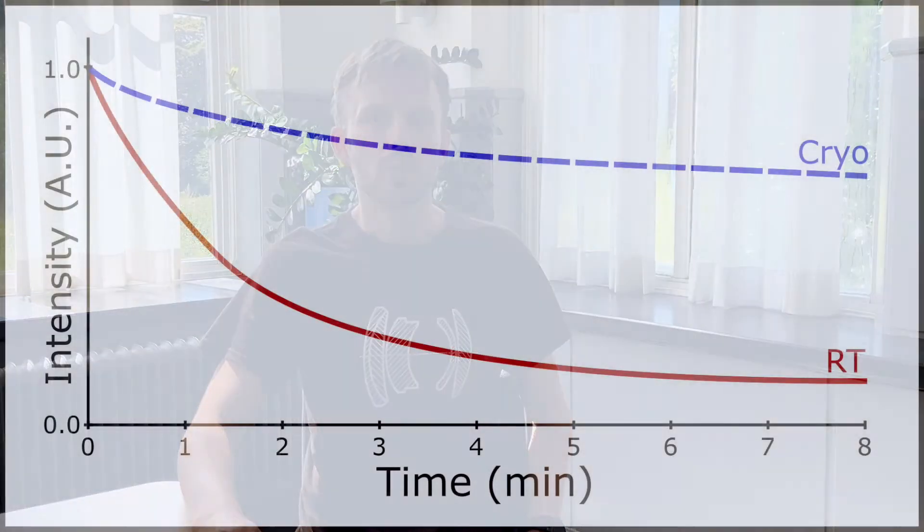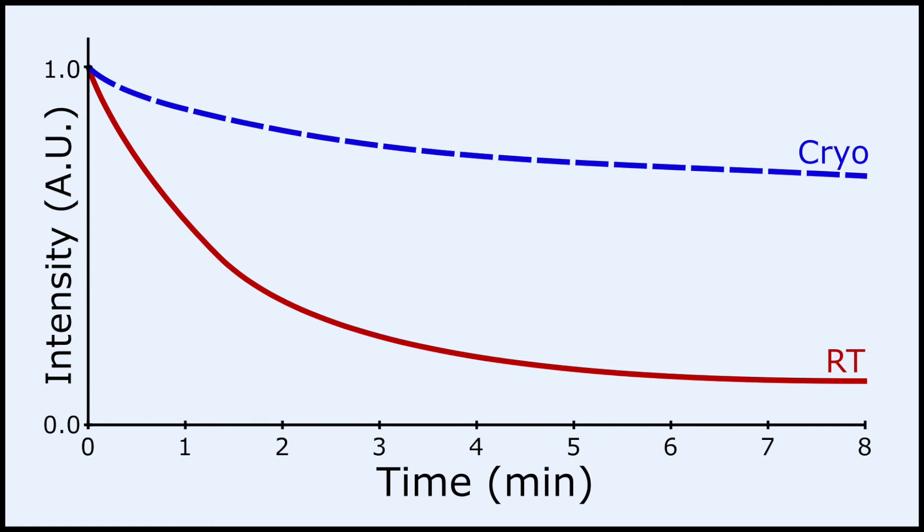Another change is that the half-life of fluorophores is increased dramatically under cryogenic conditions. This means that one can use longer exposure times to get more signal without bleaching the fluorophores. However, this also means that molecules in the cell that contribute to autofluorescence have a longer half-life as well, resulting in very high background autofluorescence in certain cell types.